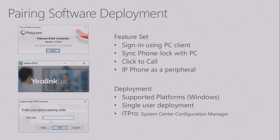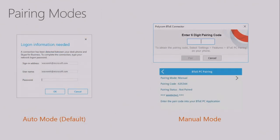To deploy the pairing software — currently called BTOE, Better Together over Ethernet, because we do the pairing over the Ethernet cable connecting from your phone to your PC — we really encourage customers to standardize BTOE for every user because it makes their life easy and the experience much better. We support this on Windows platform only. Either a single user can download it from the partner's website and install it, or the administrator can distribute and install it for users using System Center Configuration Manager or any other tool that can push it to PCs.